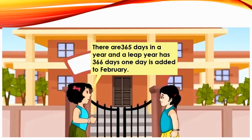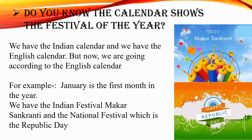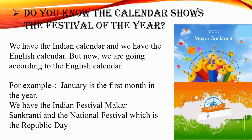Now students, what about the days in a year? There are 365 days in a year, and leap year has 366 days. One day is added to February. Leap year means it is a calendar year that contains additional days. Do you know the calendar shows the festivals of the year? Yes. Students, we have the Indian calendar and we have the English calendar. But now we are going according to the English calendar only.